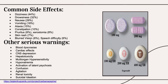Some of the most common side effects for carbamazepine include dizziness, drowsiness, nausea, vomiting, ataxia, constipation, pruritus, xerostomia, skin rash, blurred vision, and difficulty with speech. More serious warnings to carefully monitor include blood dyscrasias, cardiac effects, CNS depression, hepatotoxicity, multi-organ hypersensitivity, and hyponatremia. More prominent in the elderly population are activation of latent psychosis, confusion, and agitation. Additional serious concerns include renal toxicity and suicidal ideation.